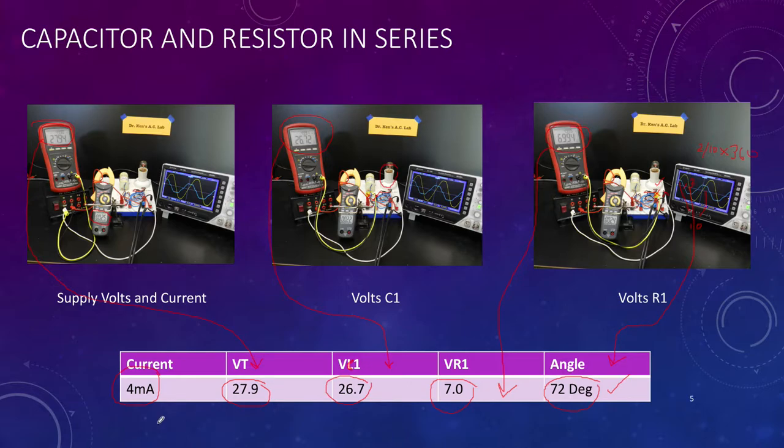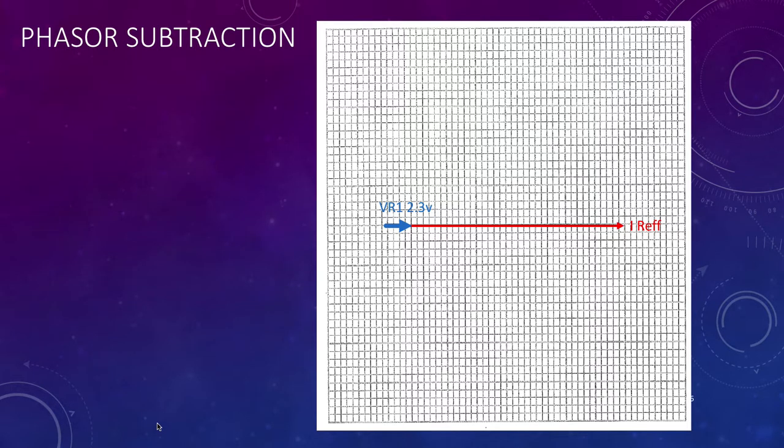As we did previously, we have to do a phasor subtraction. So what we're going to do first is we're going to put in the current reference and the 2.3 volts across the resistor. It's drawn like that because they're obviously in phase, the resistor and the current. Then we're going to add the volts.